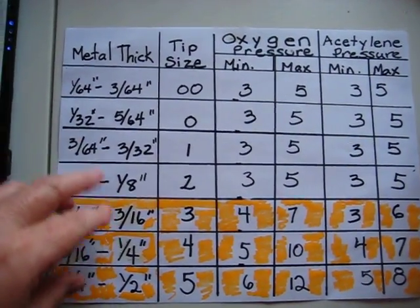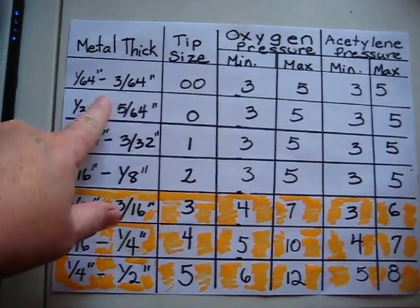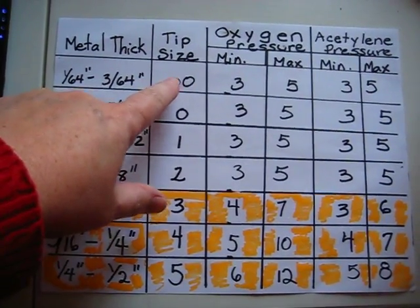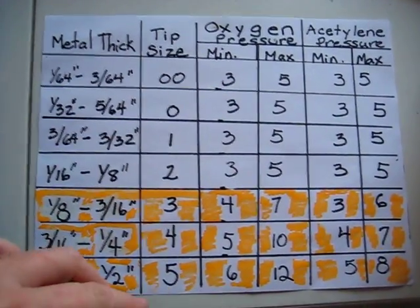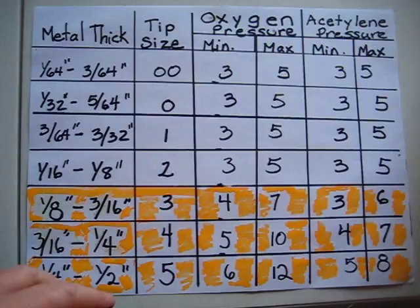Hi, y'all. Here's a chart I made with the metal thickness and the tip size, the oxygen pressure, and the acetylene pressure that you're supposed to use.